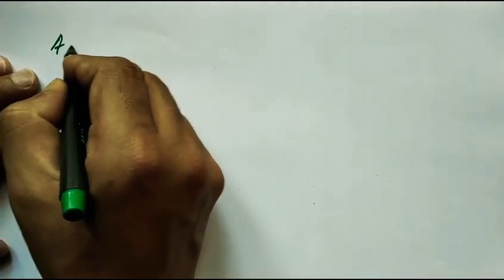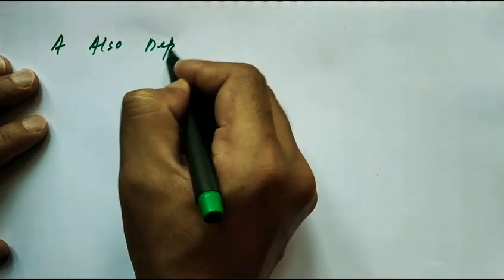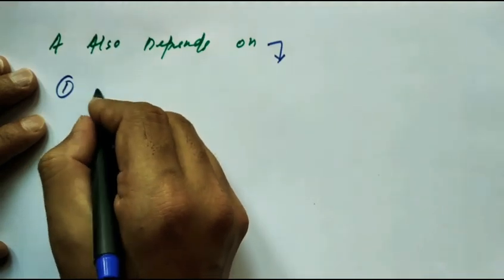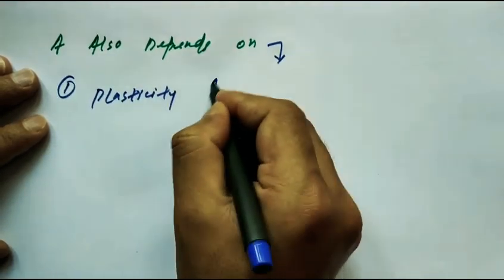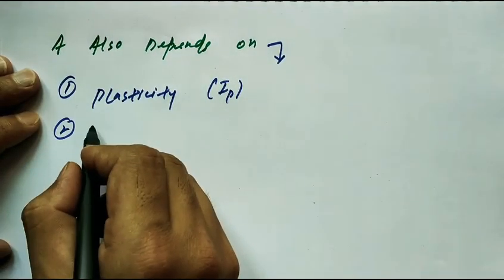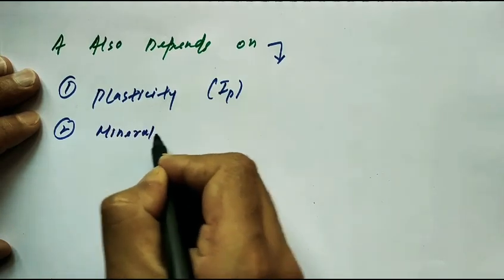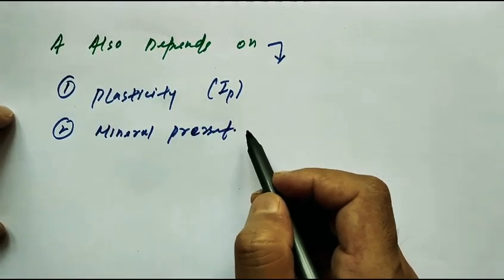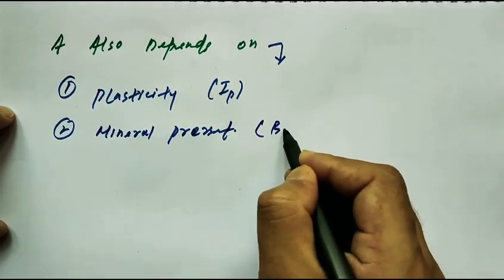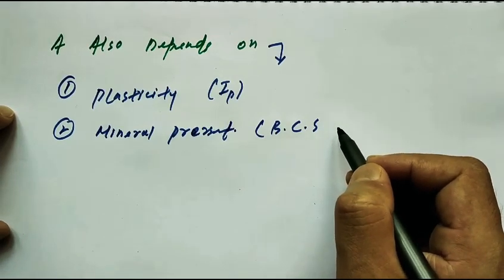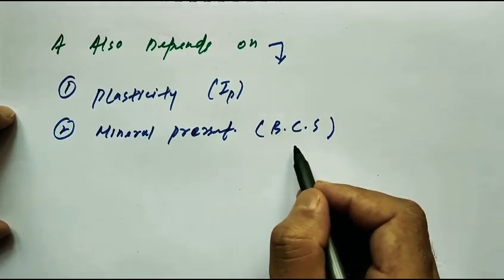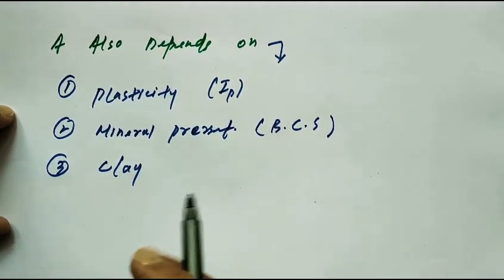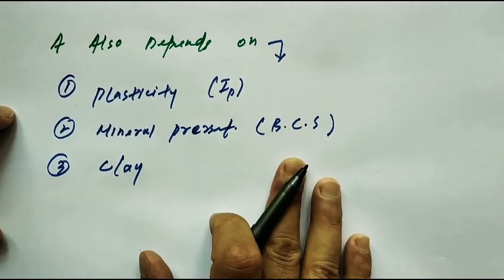Activity also depends on three factors. First, the plasticity index (IP). Second, the mineral present — for example, bentonite and black cotton soil are highly prone to water because they contain Montmorillonite in high percentage. Third, clay content.